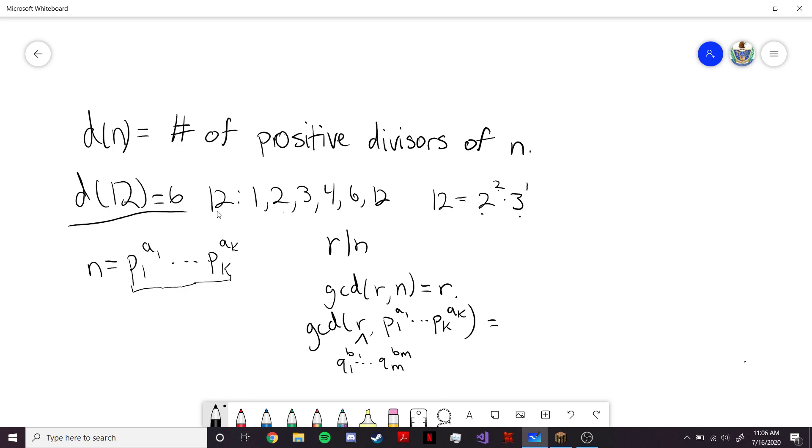So, what this means is that if the greatest common divisor between these two numbers, R and n, is equal to R, then that means that these primes Q have to form a subset of the primes P. It also means that these exponents B in the respective primes have to be smaller than the exponents A, because when we're choosing between 2 squared and 2 to the 4th, we have to pick the smallest number because that's the one that's going to fit both.